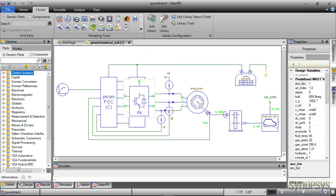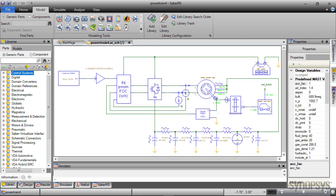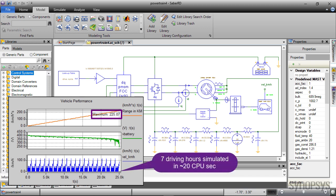Replacing high-fidelity IGBT models with average models, you can also analyze the overall system performance, such as checking the range of vehicle for one full charge of the battery very quickly in Sabre RD. For example, it takes just about 20 seconds to simulate 7 hours of a driving cycle.